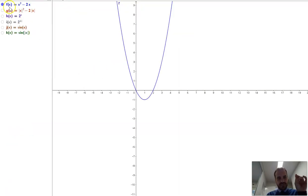So here I have the function f of x equals x squared minus 2x. Now, let's take a look at f of the absolute value of x. So that's g of x equals the absolute value of x squared minus 2 times the absolute value of x. Okay, I'm just going to get rid of the blue one for a second. And you can see we get this. And you can see it's symmetrical around the y-axis.